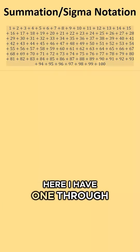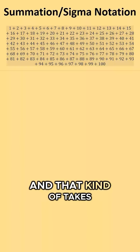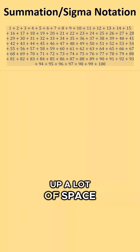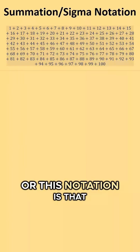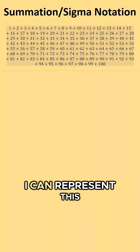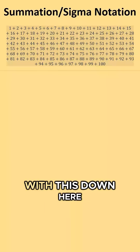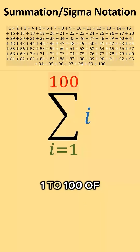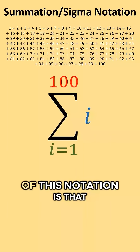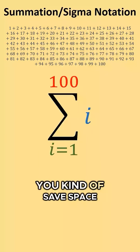Here I have 1 through 100 all added together, and that kind of takes up a lot of space. So the value of summation or this notation is that I can represent this sum of 1 through 100 with this down here — the sum from i equals 1 to 100 of i. So the real value of this notation is that you kind of save space.